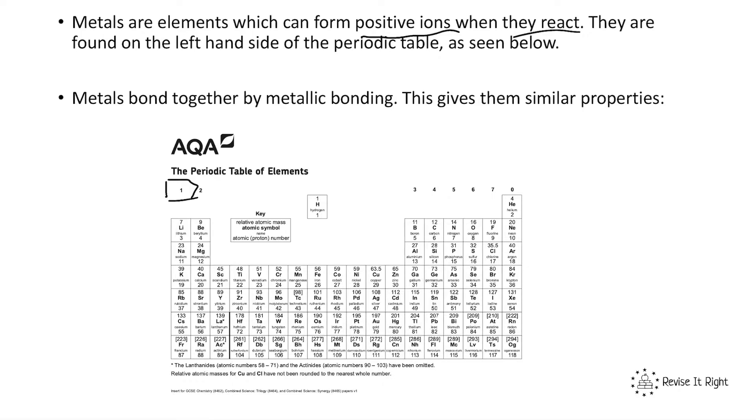Metals are found on the left-hand side of the periodic table. Remember, we drew the staircase showing that metals are on the left and non-metals are on the right-hand side.